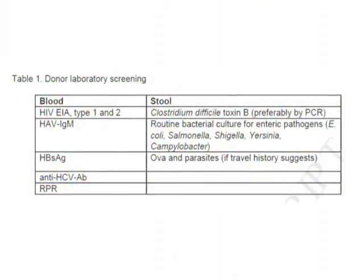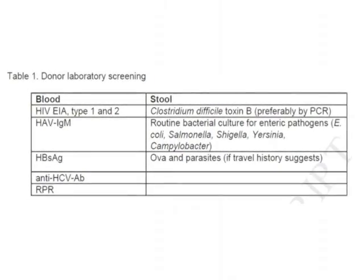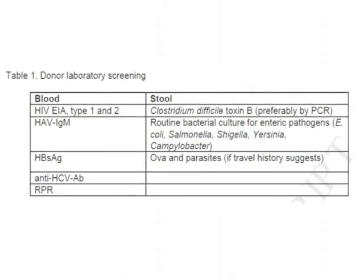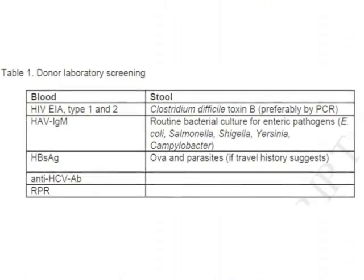The clinical data summary section should list the background information and reasons behind use of the investigational product for a specific condition. The protocol section should detail the use of the fecal transplantation protocol for a specific indication. It should include the indication, inclusion and exclusion criteria for a particular study or clinical indication. An appropriate donor screening method should be listed; a sample protocol for donor screening has been included in our article, listing blood tests and stool tests required for donor screening.